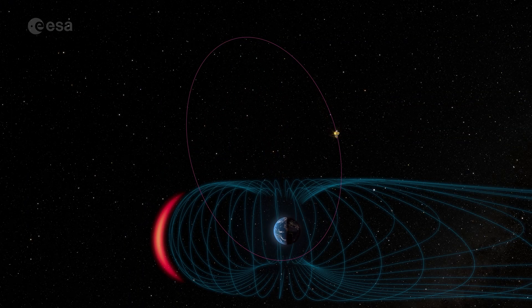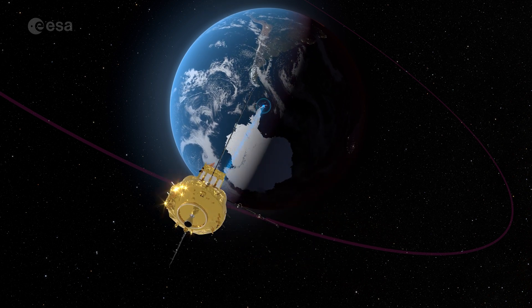SMILE will send the data it collects back down to Earth, mainly to a ground station in O'Higgins, Antarctica.